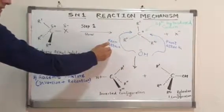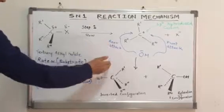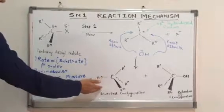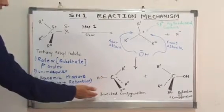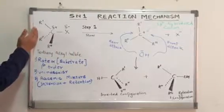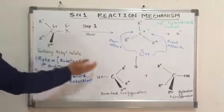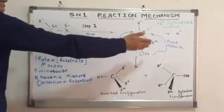If the attack takes place from the back, we have the first product over here, which has a configuration opposite to that of the initial starting substrate.